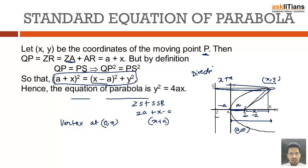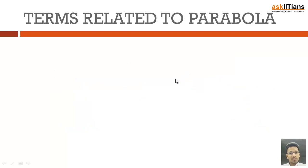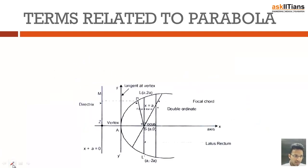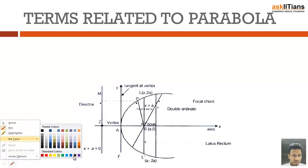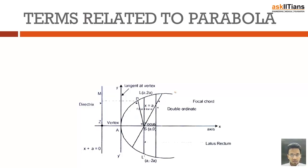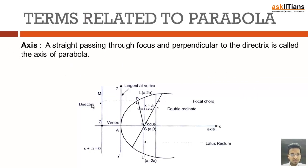The focus and directrix are each a distance 'a' apart from the vertex, so the vertex is also one point of the parabola. That's why defining the distance in terms of 'a' makes the equation easy to derive. Now let's see the various terms related to parabola. For studying any conic, some basic properties need to be studied. The first term is the axis.